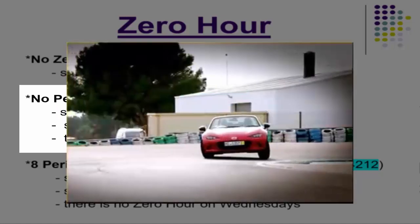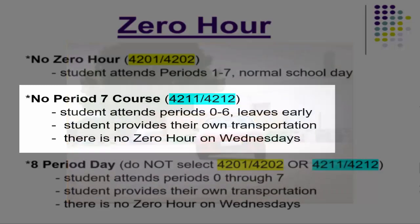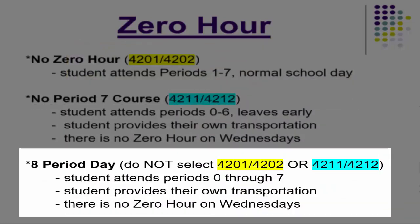Students need to provide their own transportation to and from school. There is no zero hour on Wednesdays. The last choice is an eight-period day. If you choose an eight-period day, you do not select the no zero hour or the no period seven course. Students attend periods zero through seven and provide their own transportation to school. There is no zero hour on Wednesdays.